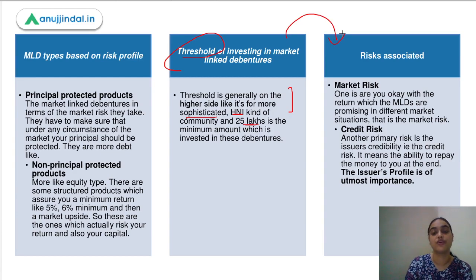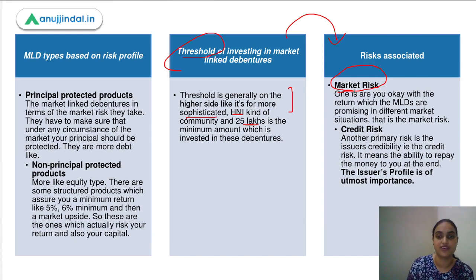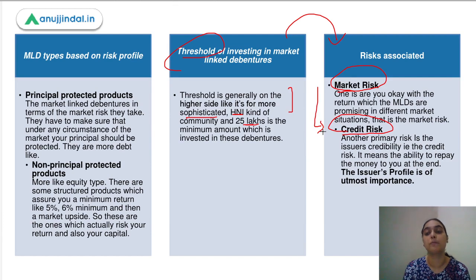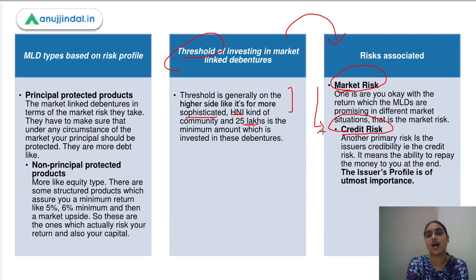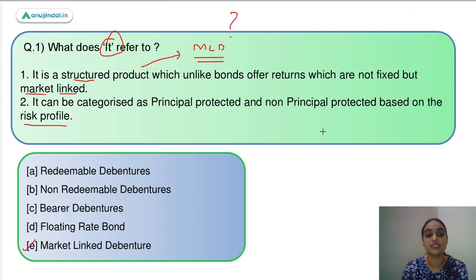Regarding risks: first is market risk — returns are dependent on the market, so you must be satisfied with what this product offers. Second is credit risk — the issuer may default and might not be able to pay you back. You need to assess the issuer's financial performance, financial position, and accounting ratios before investing. This was all about market linked debentures; the answer was option E.